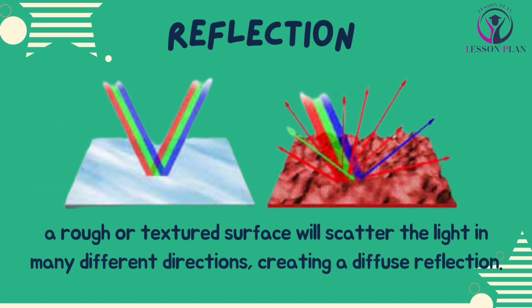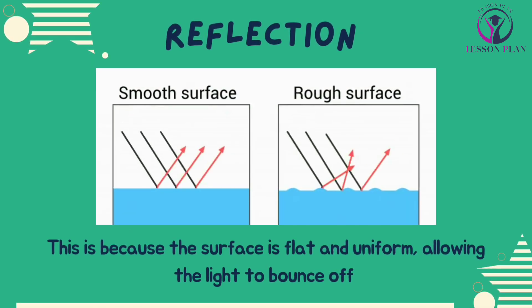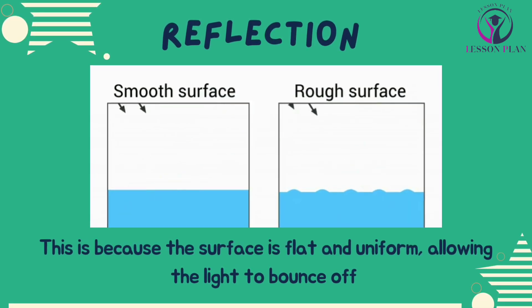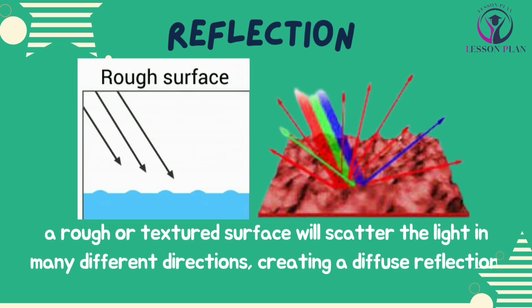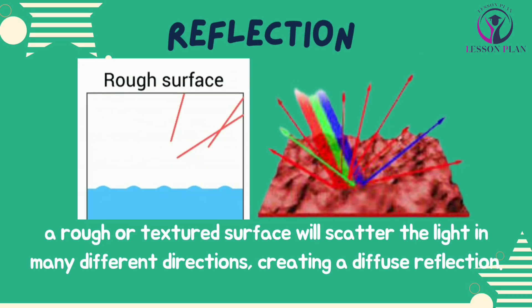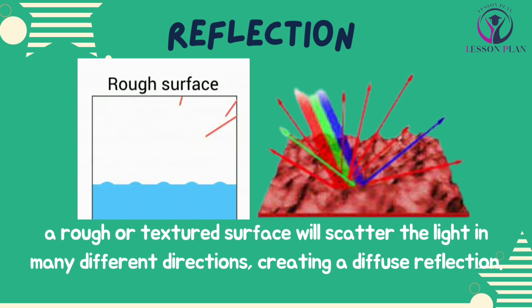The surface of an object can greatly affect the reflection of light. A smooth surface, such as a mirror or a still body of water, will reflect light in a predictable and clear way, because the surface is flat and uniform, allowing light to bounce off without being scattered or absorbed. On the other hand, a rough or textured surface will scatter the light in many different directions, creating a diffuse reflection.